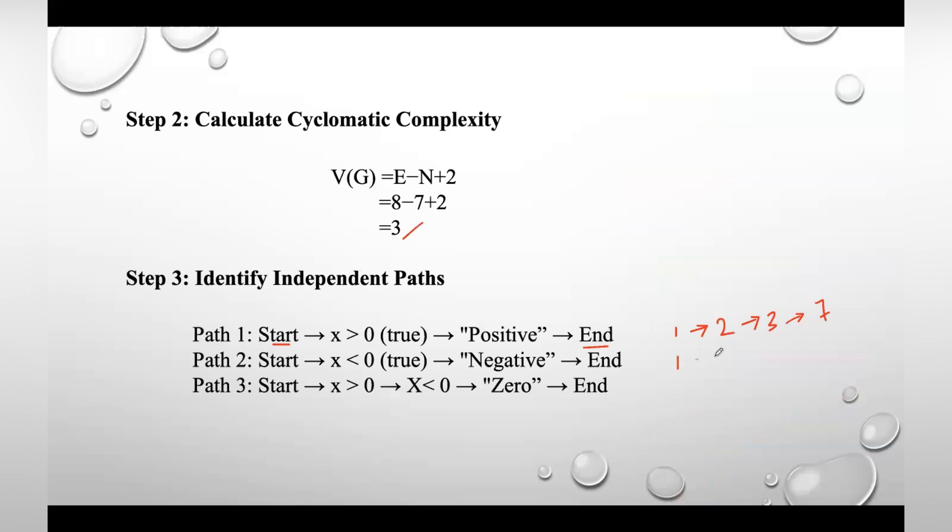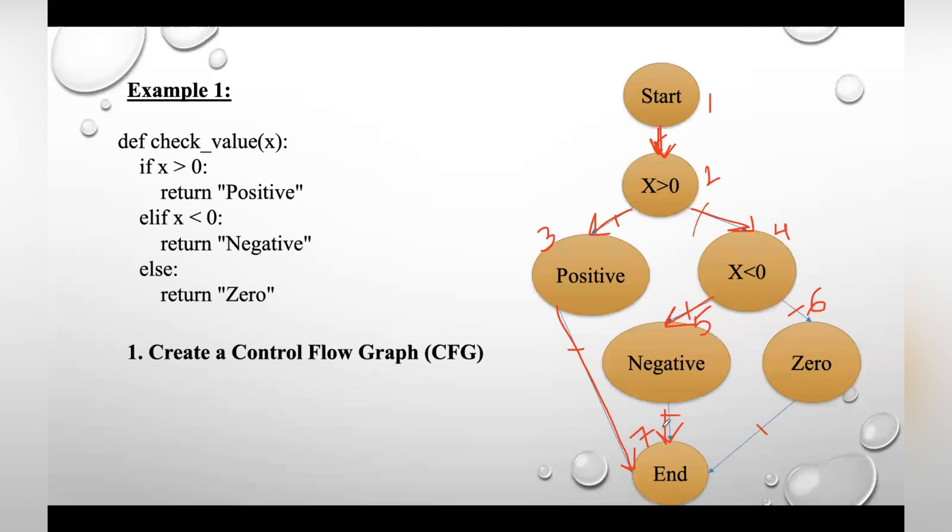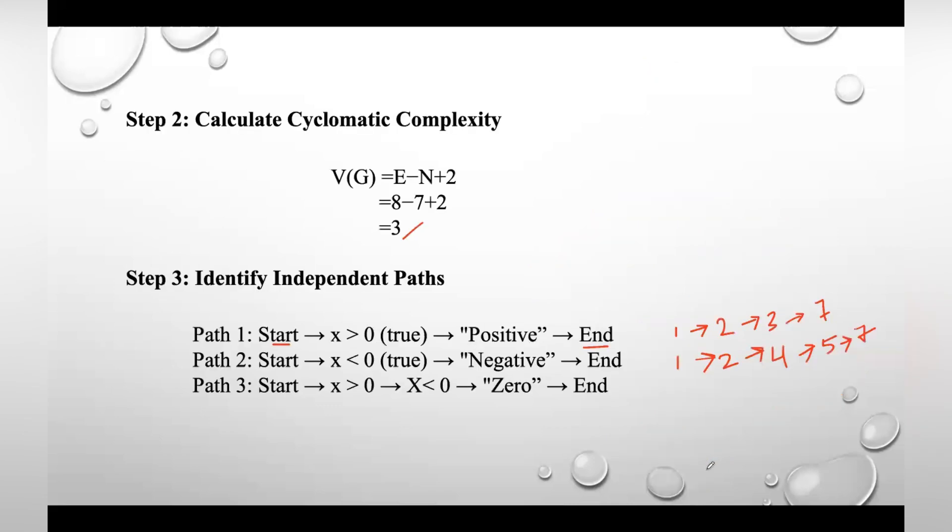What are the values? 1, 2, 4, 5, 7. So this second path can be written as 1-2-4-5-7. The third path is 1, 2, 4, this leftover path—6 and 7.